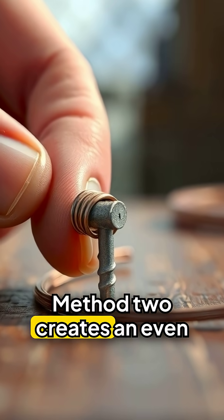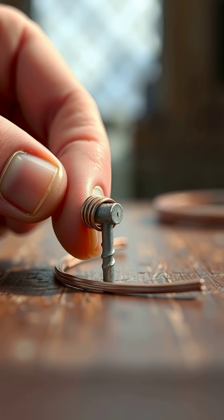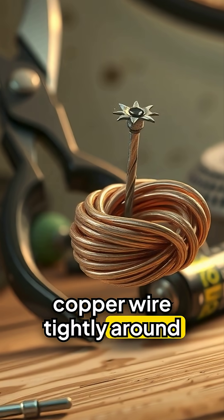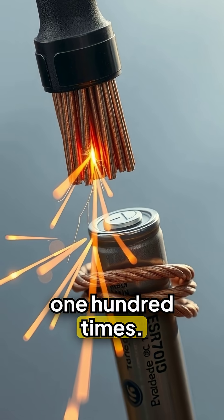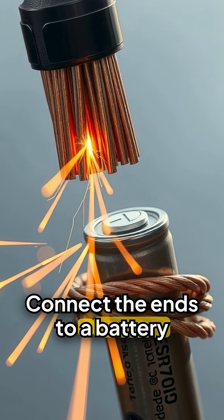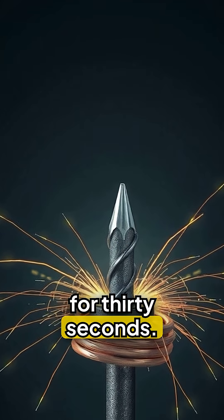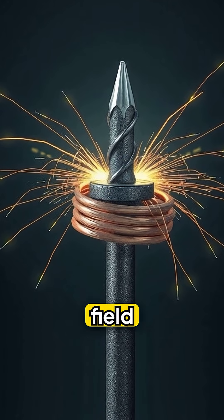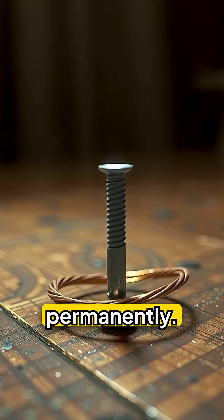Method 2 creates an even stronger magnet. Wrap copper wire tightly around your nail at least 100 times. Connect the ends to a battery for 30 seconds. This electromagnetic field magnetizes the steel permanently.